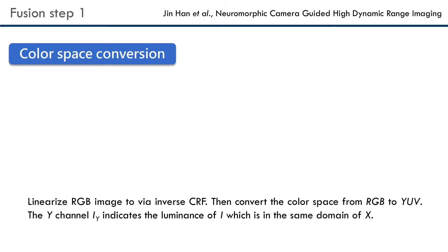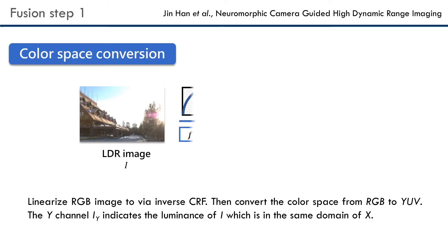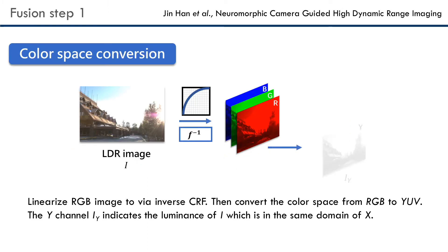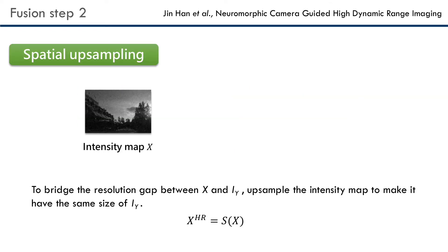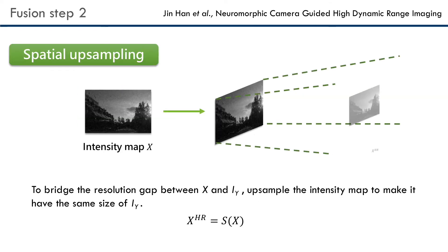Firstly, we linearize I and then convert it from RGB to YUV color space, then upsample the intensity map X.